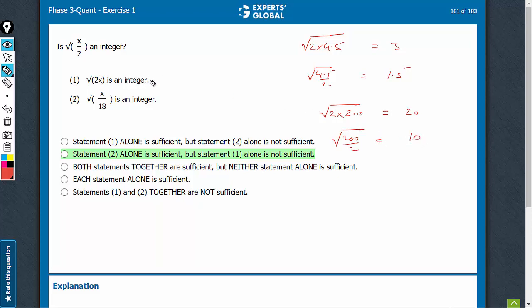So, when the value here is even, this will be an integer. When the value here is odd, this will not be an integer, and therefore, YES and NO both are possible. Statement 1 is not sufficient.